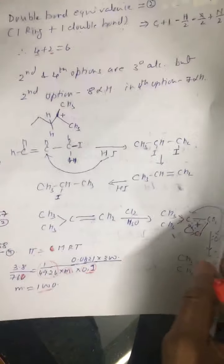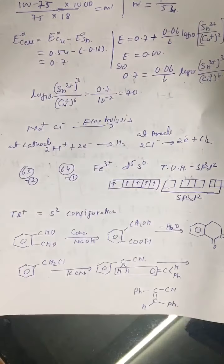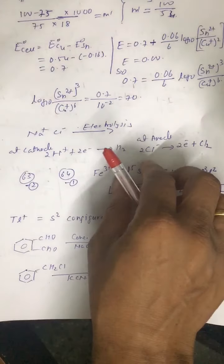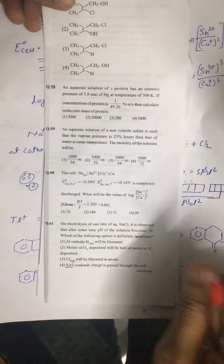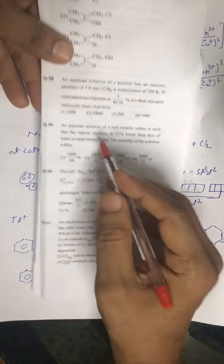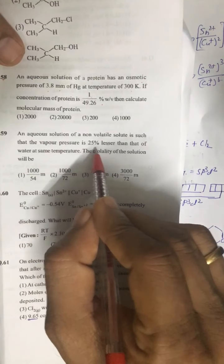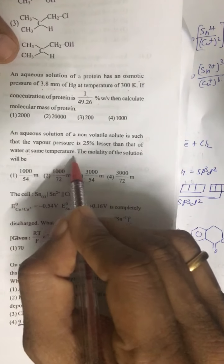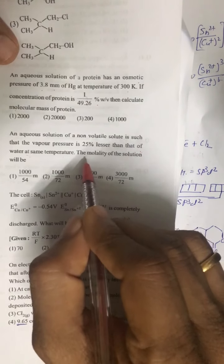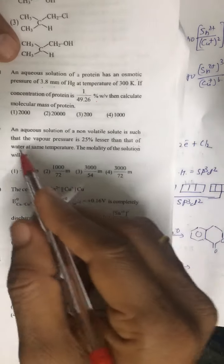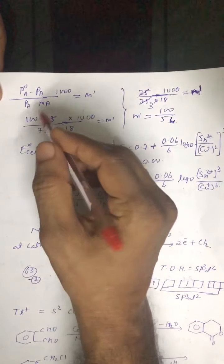Question number 59: an aqueous solution of a non-volatile solute is such that the vapor pressure is 25 percent less than that of water at the same temperature. We have to find the molality of the solution.